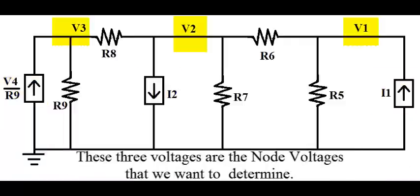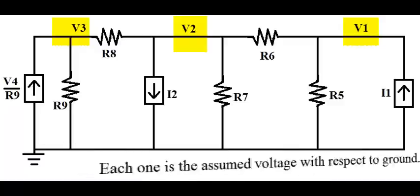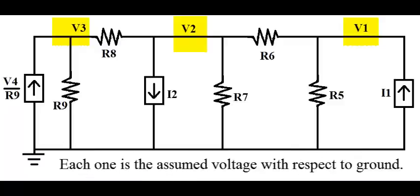These three voltages are the node voltages that we want to determine. Each one is the assumed voltage with respect to ground.